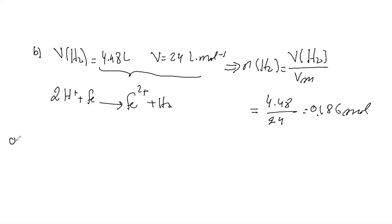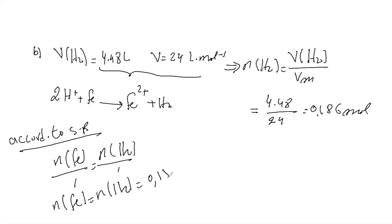We can calculate the number of moles of Fe according to stoichiometry: N of Fe over 1 equals N of H2 over 1, so N of Fe = N of H2 = 0.186 mole. The mass M = N times M = 0.186 times 56 given.